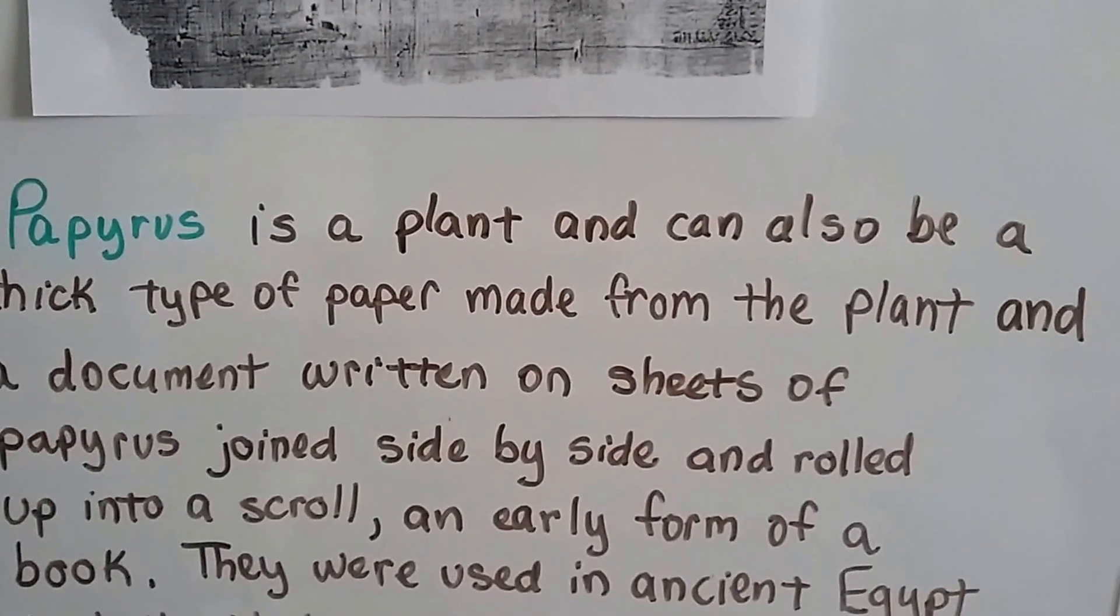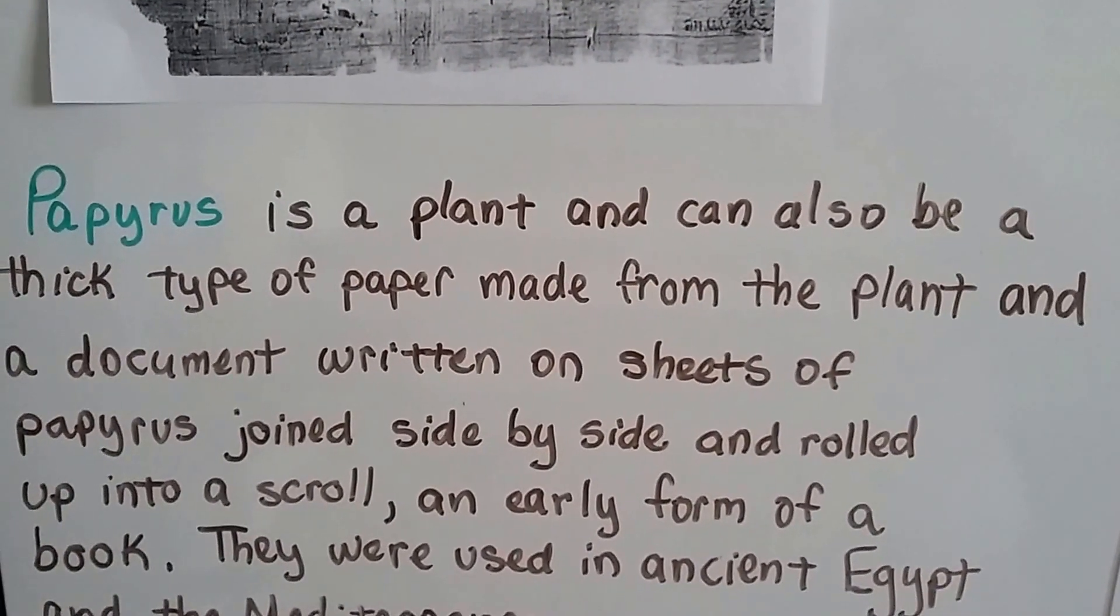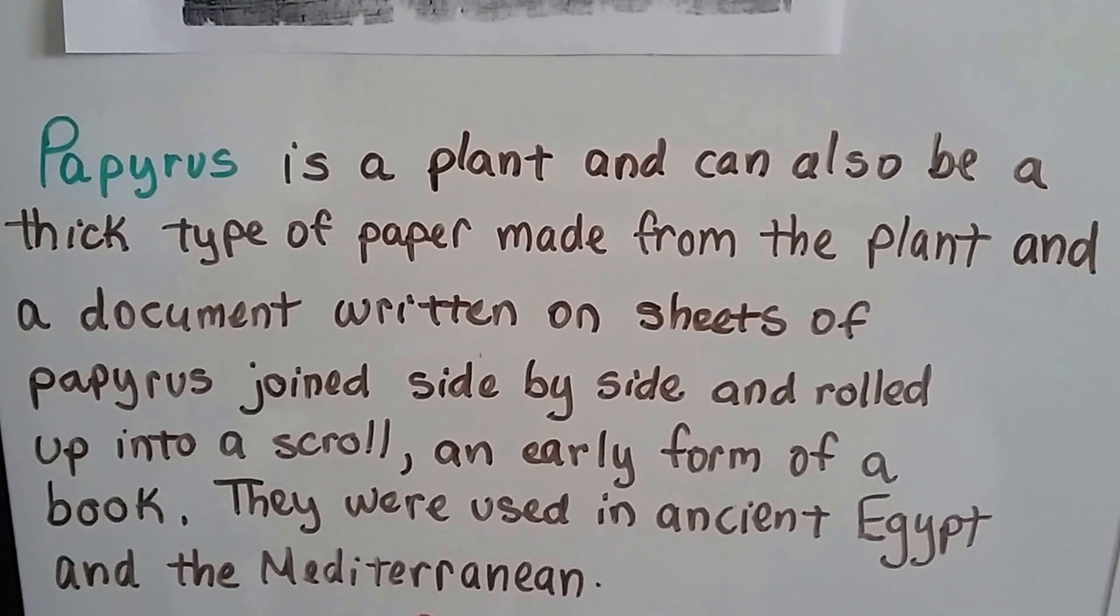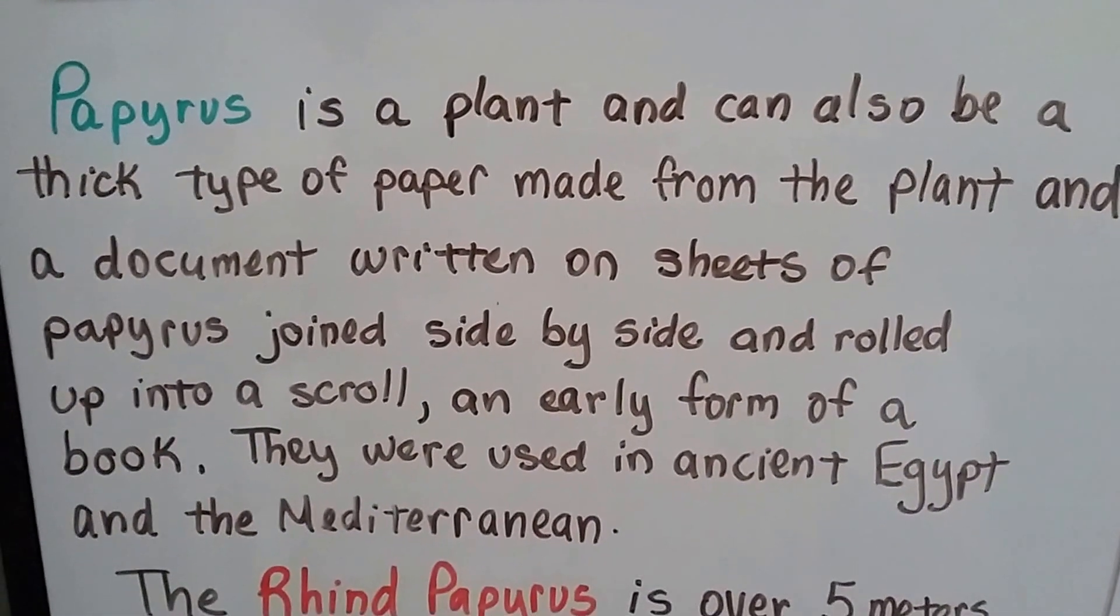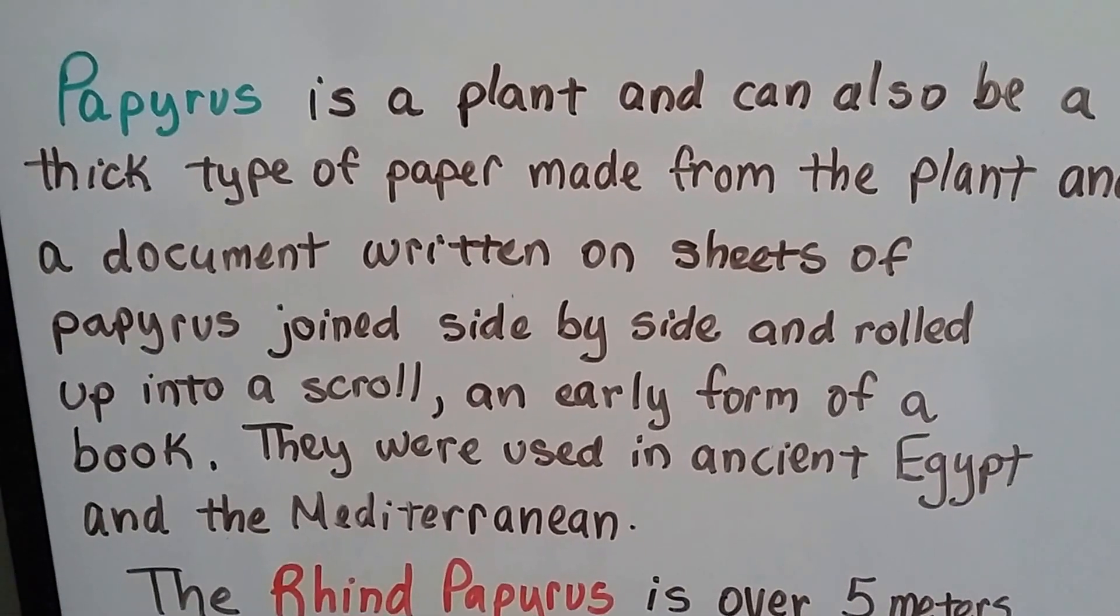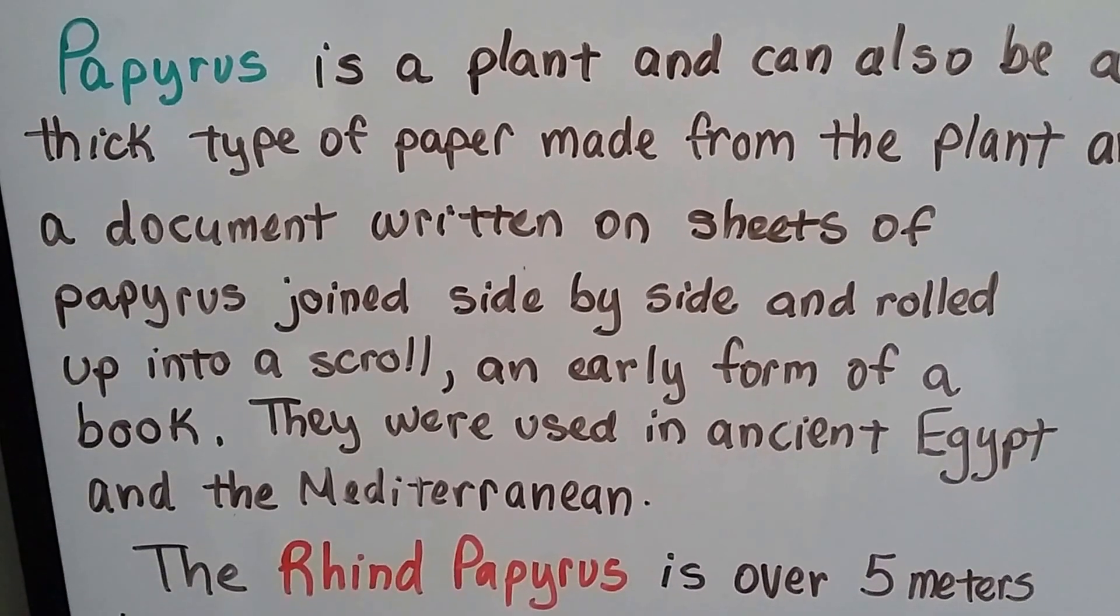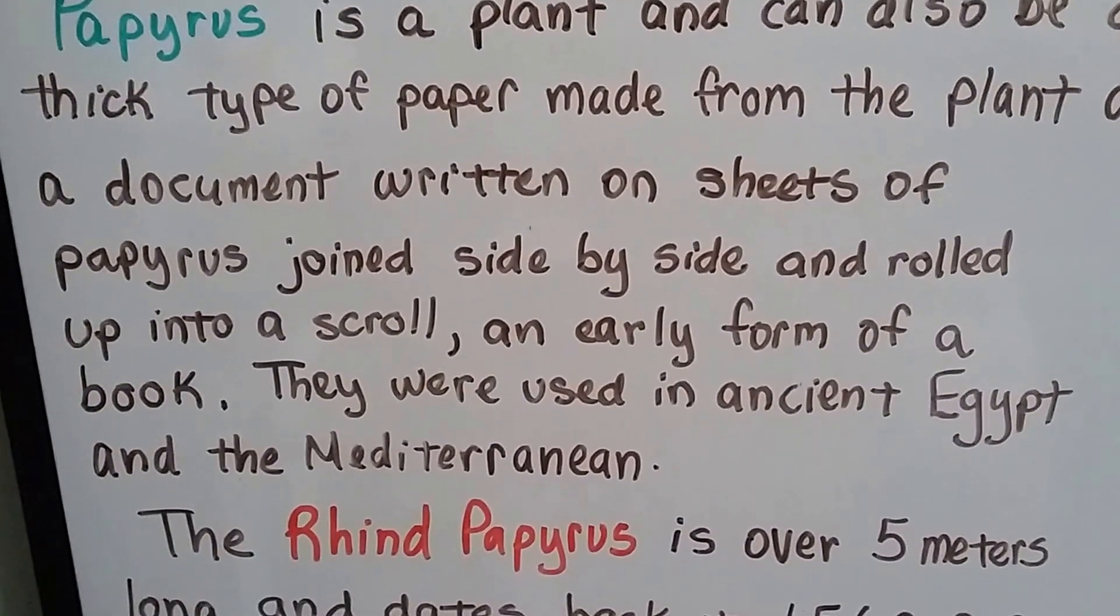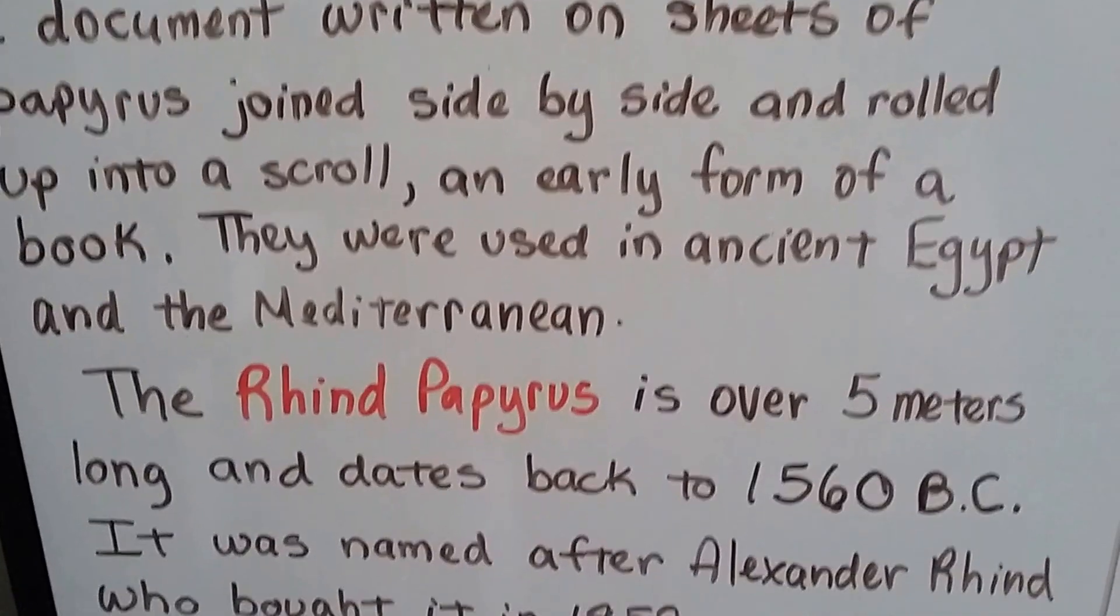Papyrus is a plant. It can also be a thick type of paper made from the papyrus plant, and it could be a document written on these thick sheets of papyrus, joined side by side and rolled up into a scroll. It's an early form of a book. They were used in ancient Egypt and in the Mediterranean.